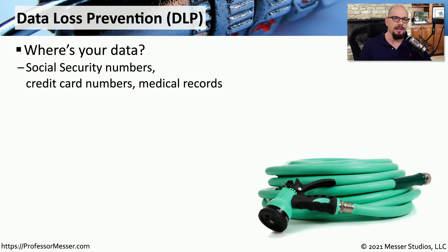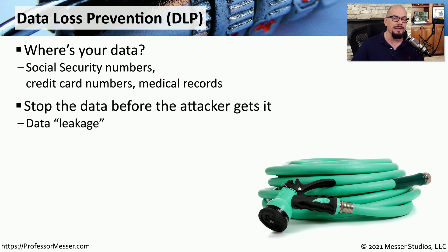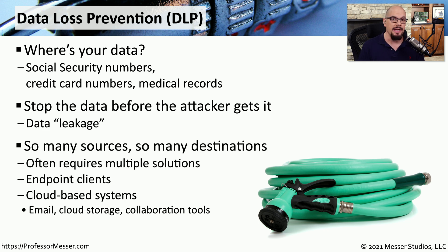Organizations are keeping databases of very sensitive information — medical records, social security numbers, credit card numbers, and other types of confidential data. To prevent that sensitive information from being sent across the network in a visible form, we use Data Loss Prevention, or DLP. DLP is designed to stop data leakage and prevent sensitive data from being sent across the network in the clear or even in encrypted form. DLP often involves many different systems because there are so many different places that could be sending this information.